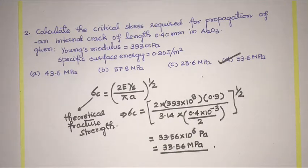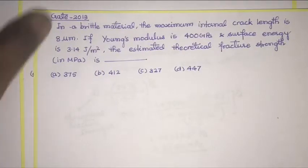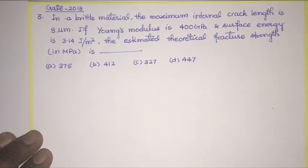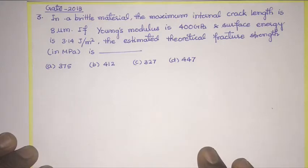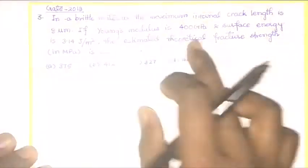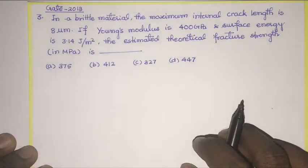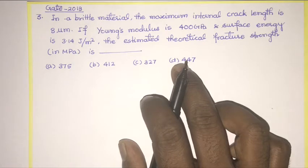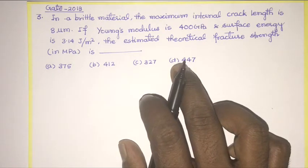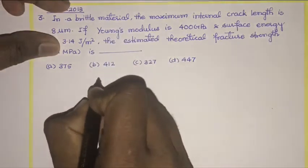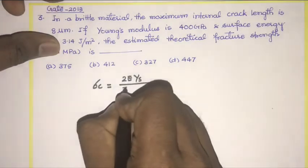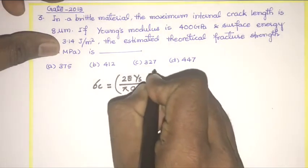Let's solve another problem. This problem has been asked in GATE 2013. The question is: in a brittle material, the maximum internal crack length is 8 micrometer. If the Young's modulus is 400 GPa and surface energy is 3.14 J/m², then the estimated theoretical fracture strength is what? We have to find σc, and we know σc = (2Eγs / πa)^(1/2).